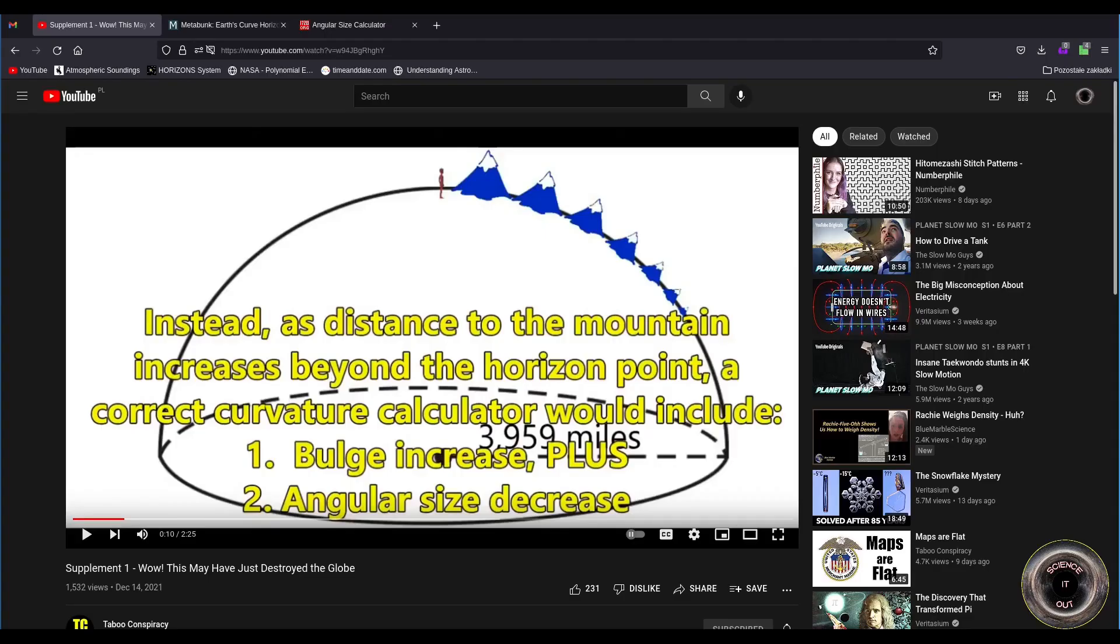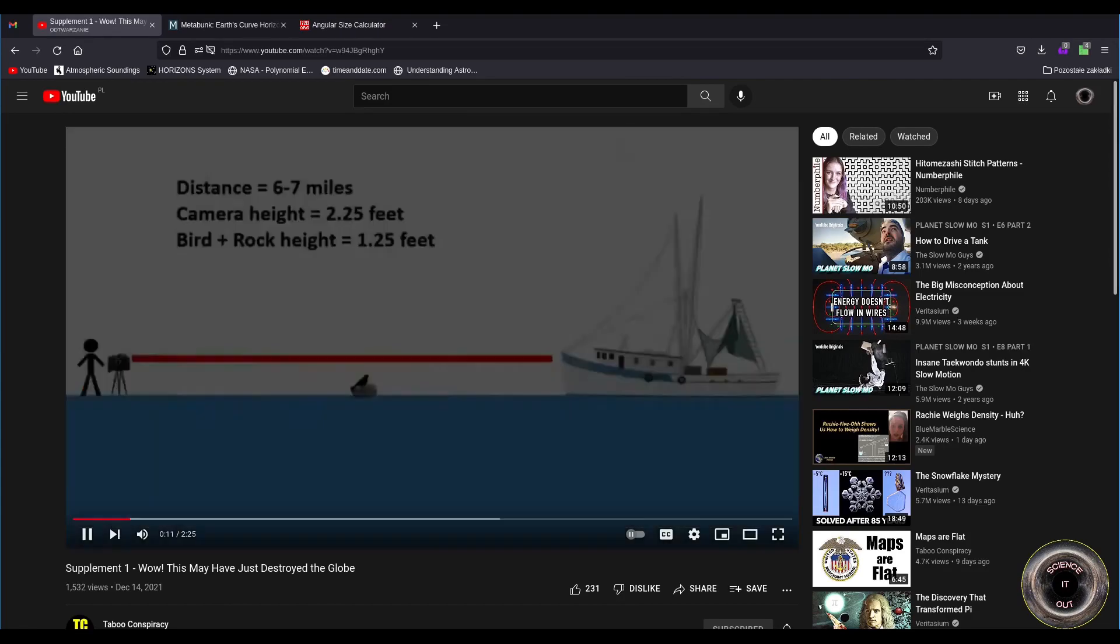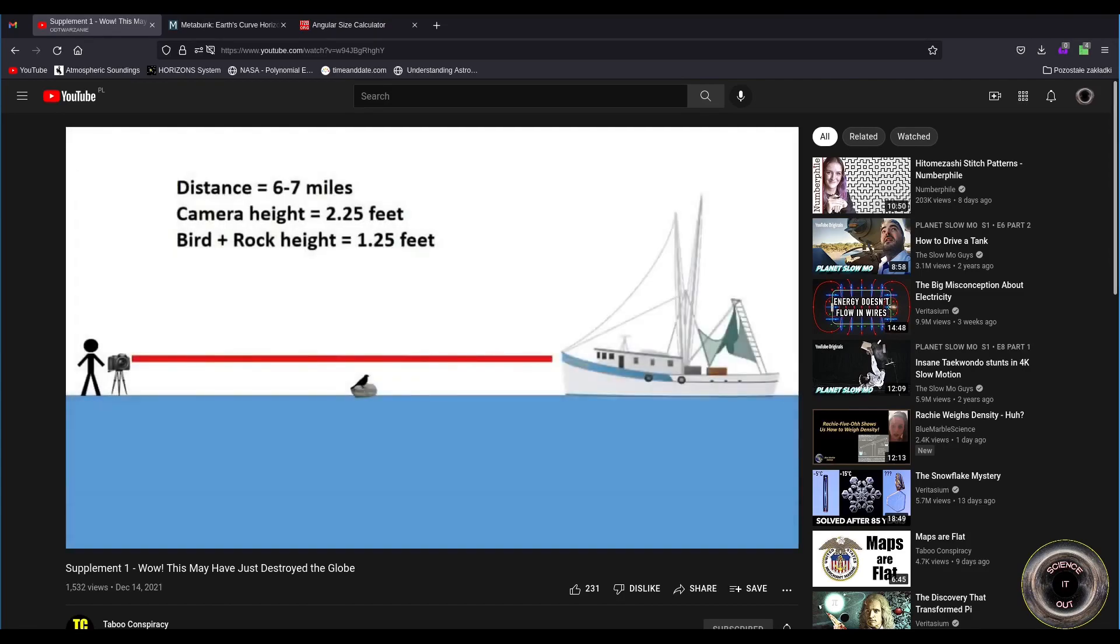To stress his point, Taboo Conspiracy released a supplement in which he presents two observations. So I'll address this quickly. Over to him. Example 1. If a camera is placed at 2.25 feet above the water and is filming a boat approximately 6-7 miles away, would a bird and rock about 1.25 feet above the water ever be taller than the distant boat as portrayed in this diagram?